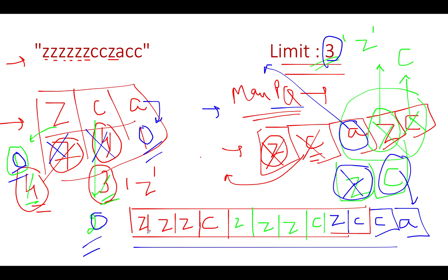The final string is ZZZ, C, ZZZ, C, Z, CC, A - which is as expected. To conclude, I'll follow the same steps in the coding section.